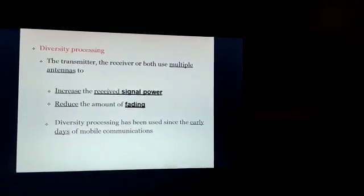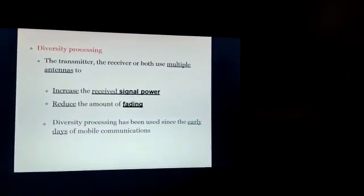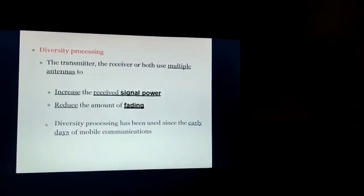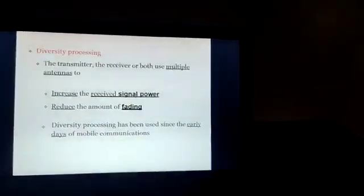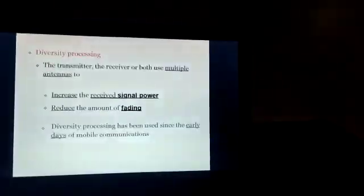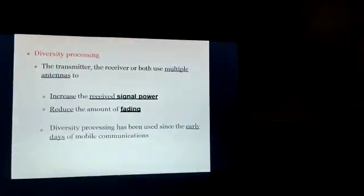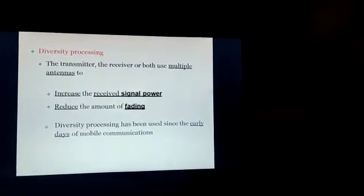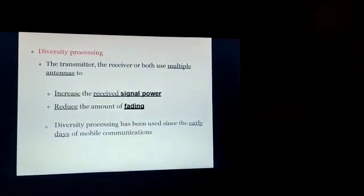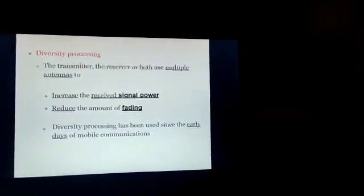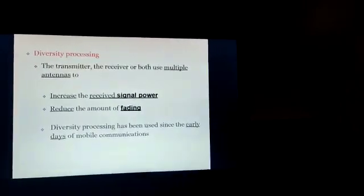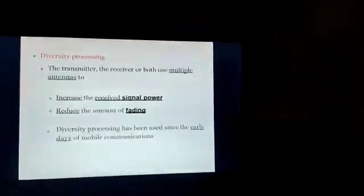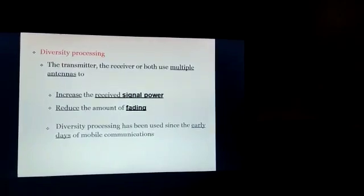In diversity processing, the transmitter and the receiver both use multiple antennas such that the signal power increases. It reduces the amount of fading. Fading is nothing but signal loss. Diversity processing has been used since the early days of mobile communication.